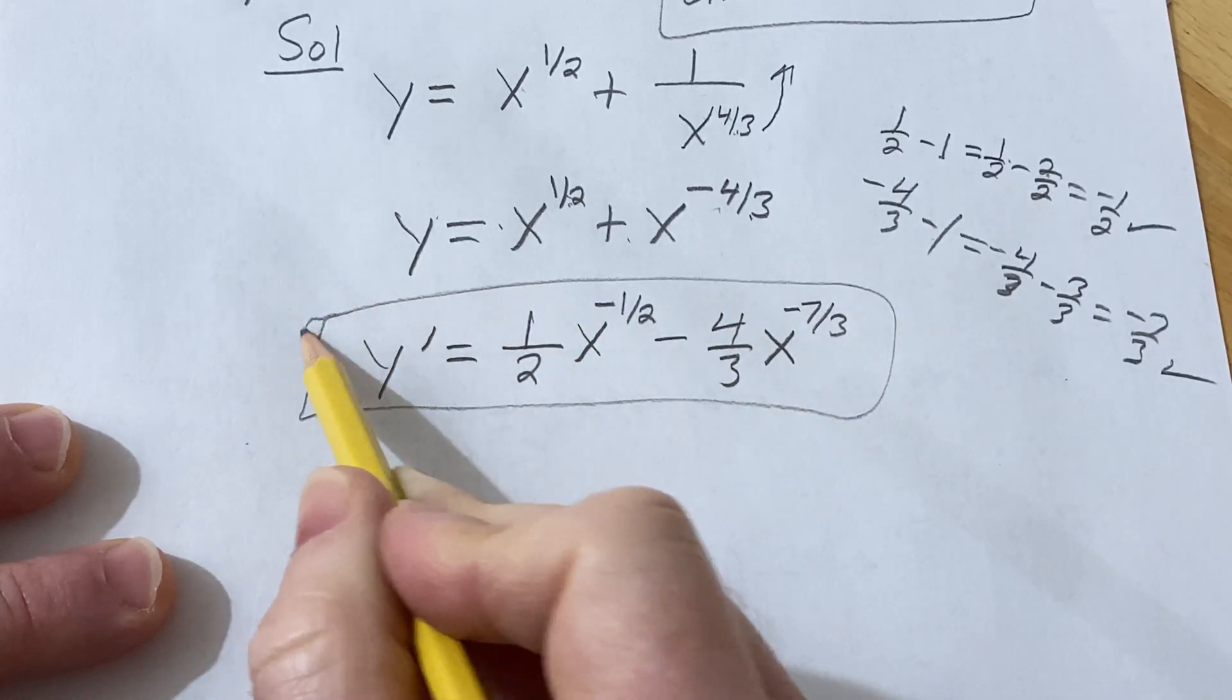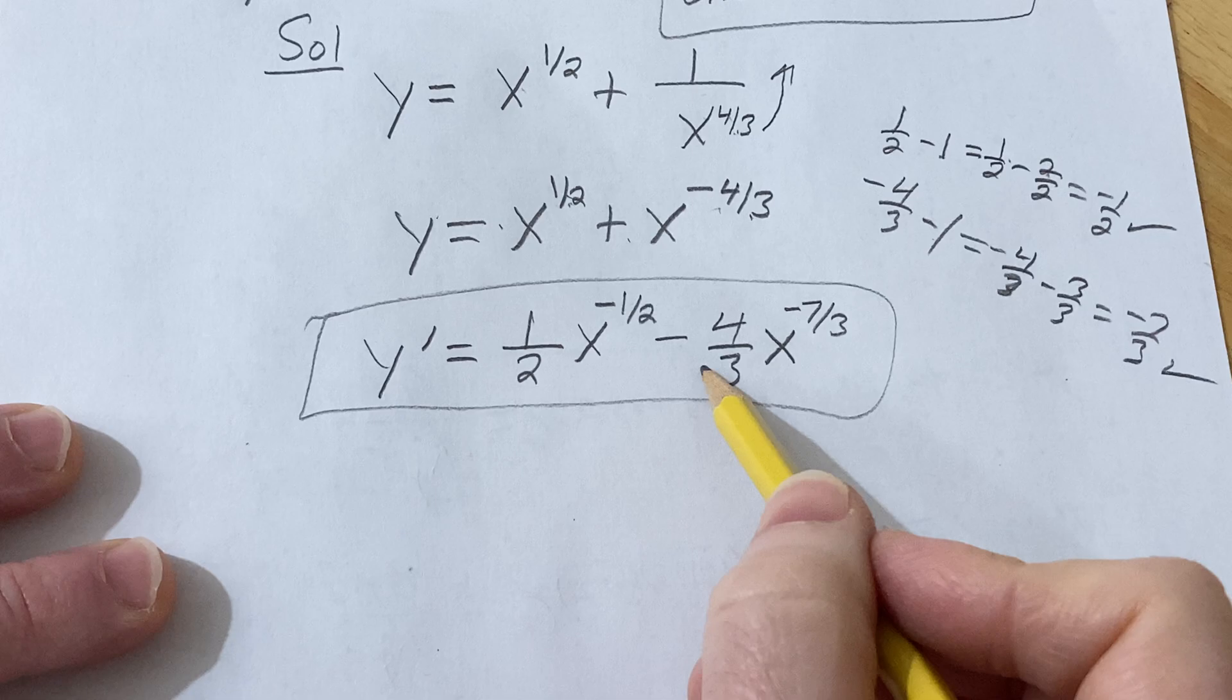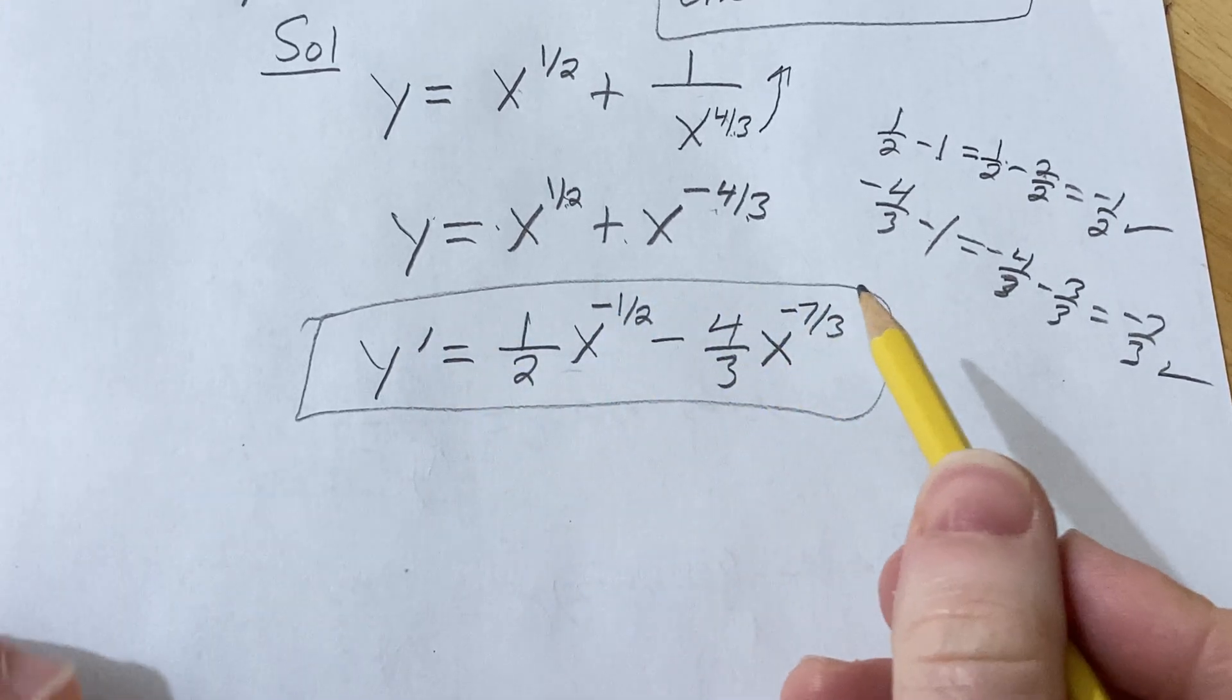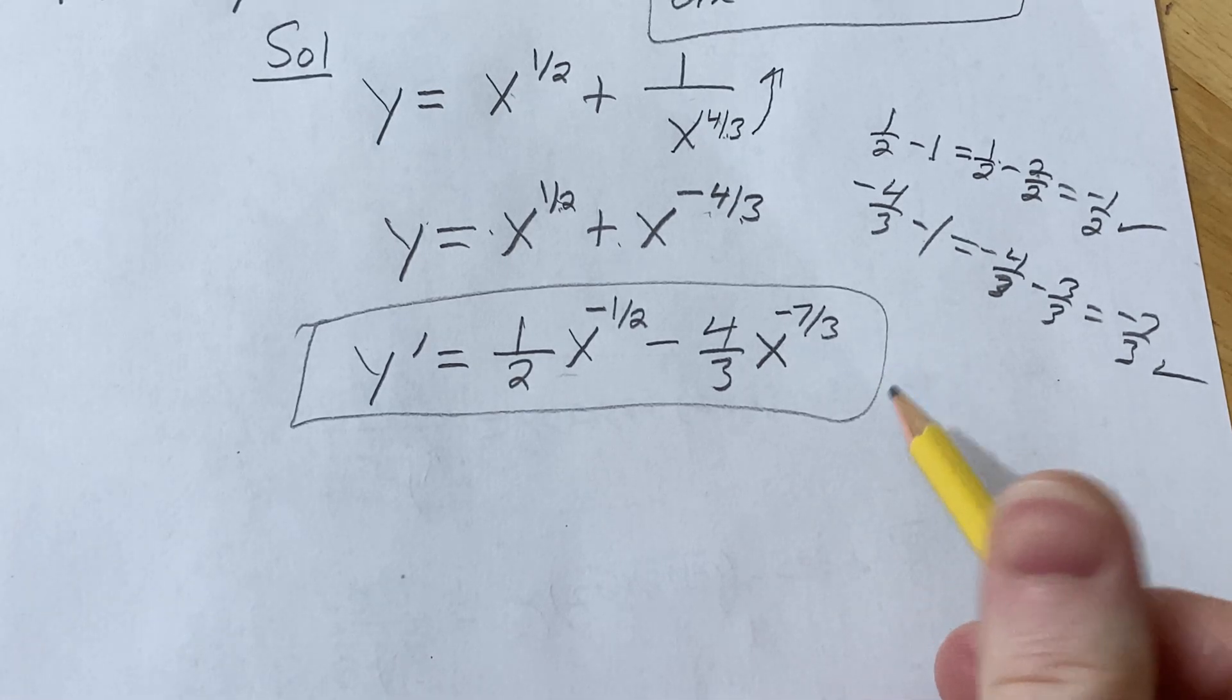And so that's actually the final answer. You can rewrite it and bring the exponents down and write positive exponents and radicals again, but you can also just leave it like this. I hope this video has been helpful. Good luck.